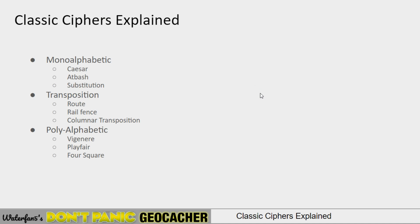So: Classic Ciphers Explained. I've classified them into three categories and I will discuss nine different common ciphers. Monoalphabetic ciphers are ciphers that do very straight transitions of letters, so every letter consistently matches to another letter. I'll give three examples: Caesar, Atbash, and substitution. I'll also talk about transposition ciphers, which change the way letters are ordered but not necessarily the letters themselves, and then polyalphabetic ciphers, slightly more complicated, where each letter can map to another letter depending on its position.